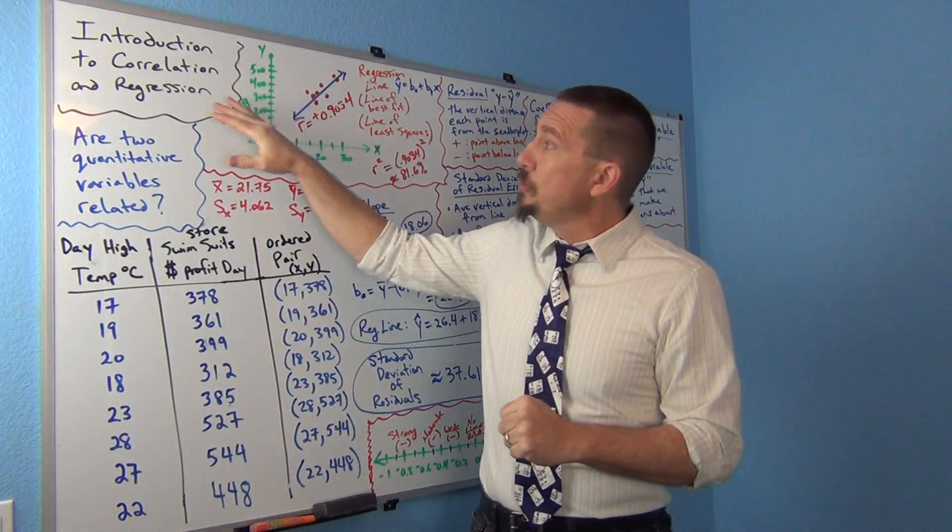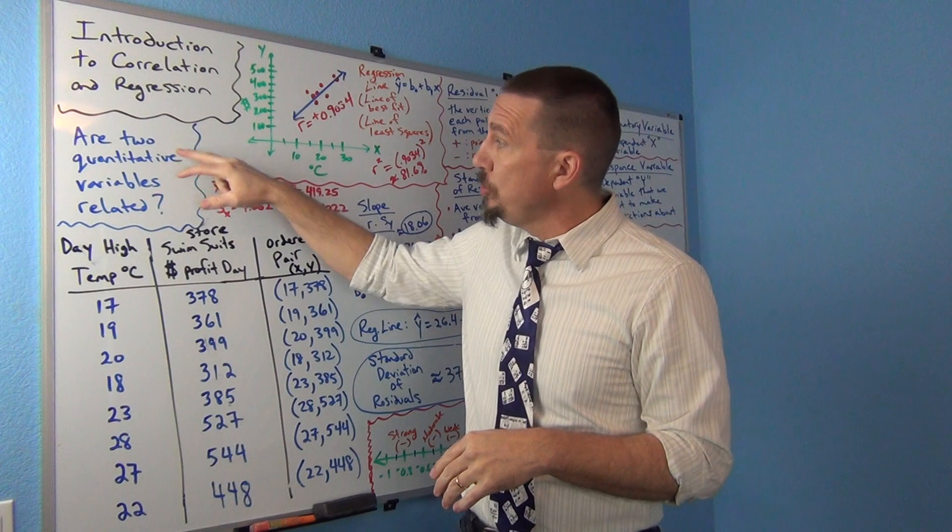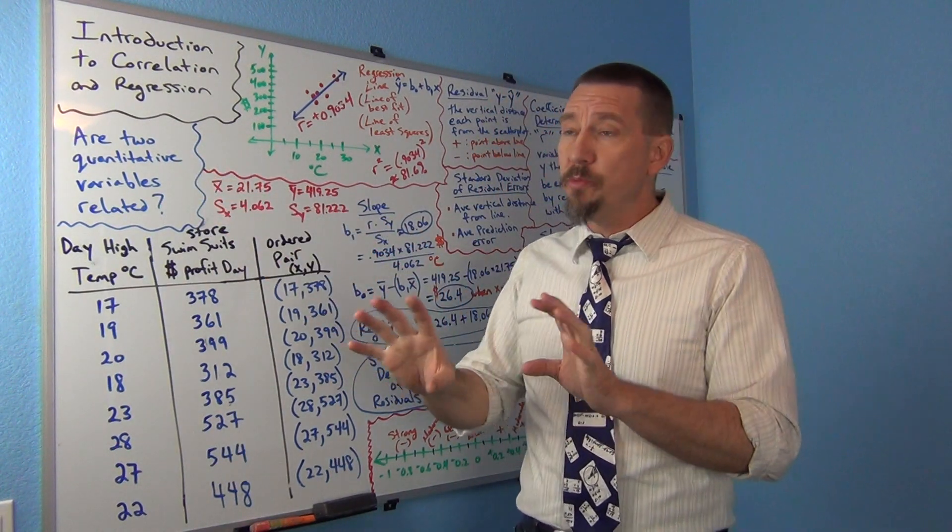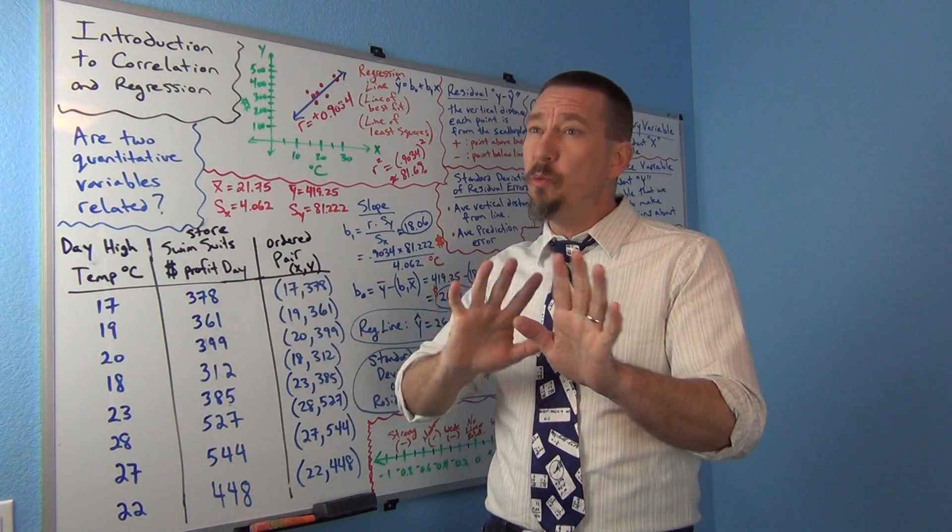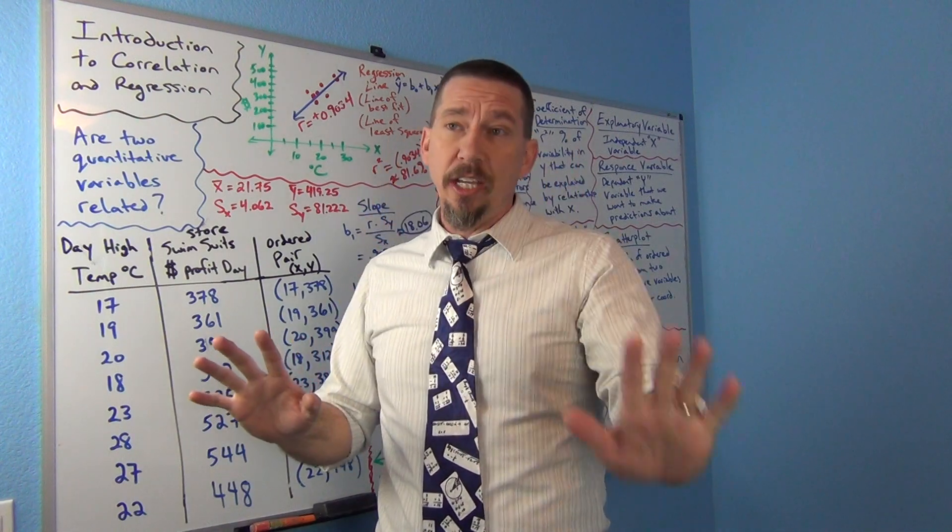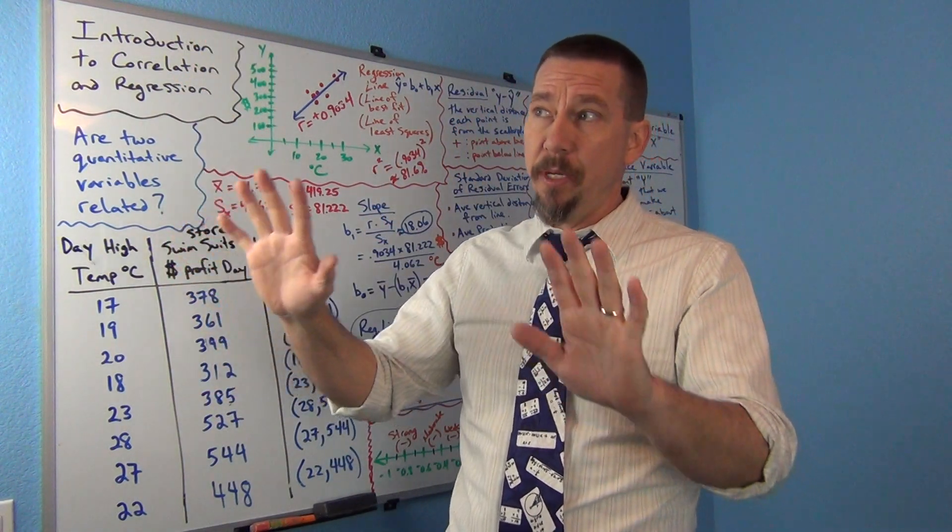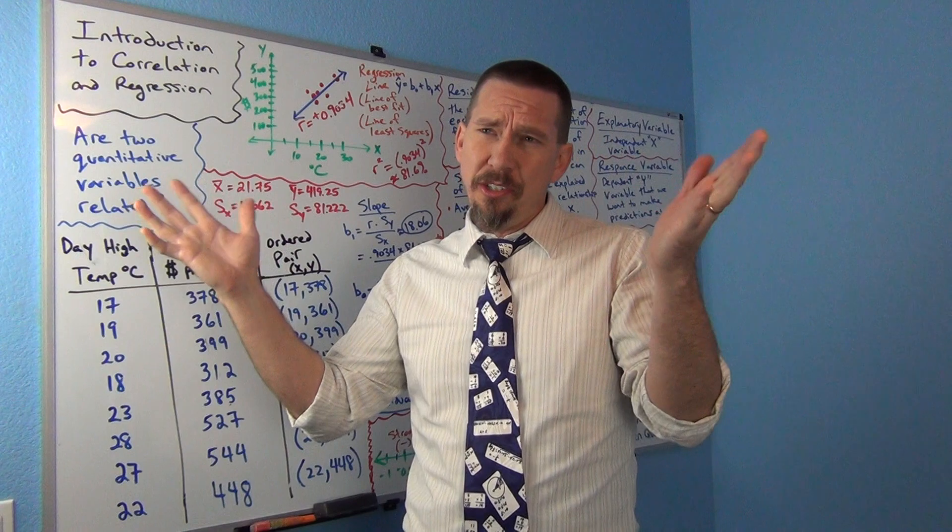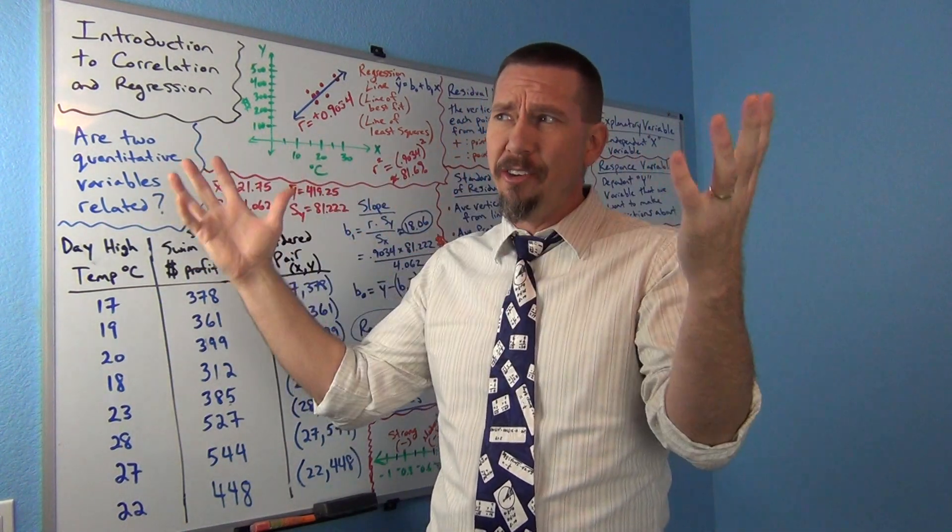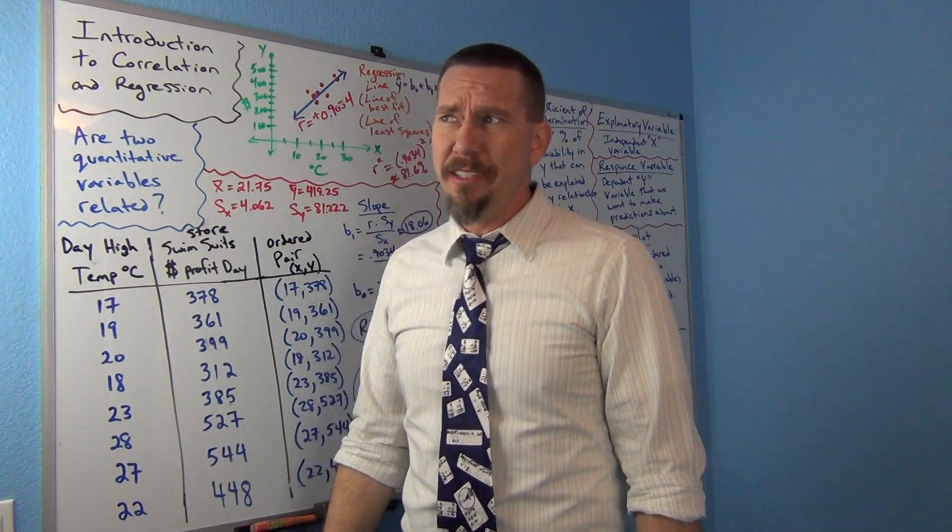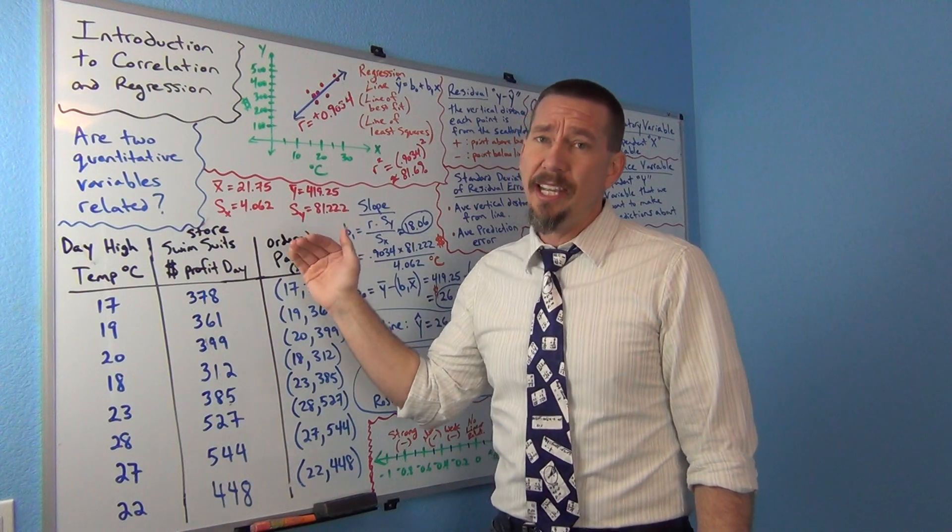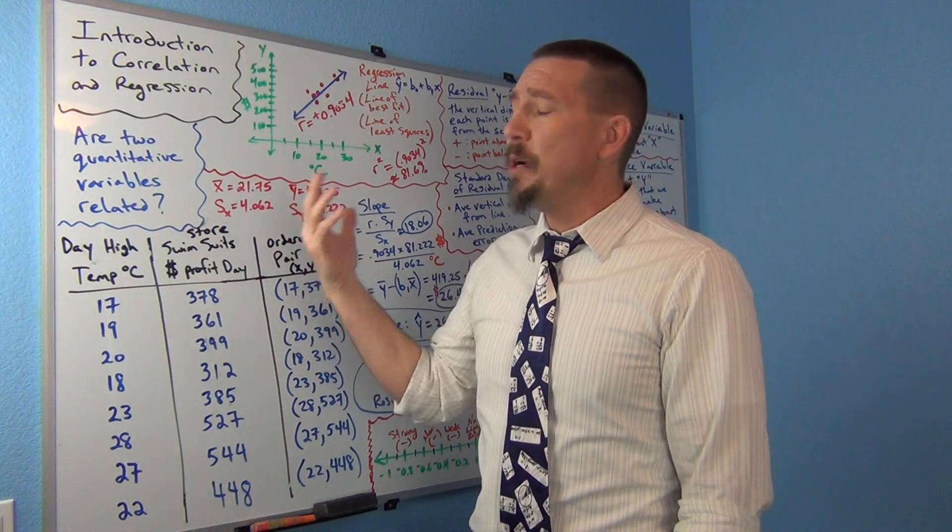The key with correlation and regression is that you're dealing with two different quantitative data sets, usually with different units. And the different units is really what changes the way we analyze. If you're comparing the amount of profits for one company to the profits for another company, you can do that with a two-sample t-test - just compare the profits directly and count how many standard errors apart the sample means are. But when you're dealing with two completely different quantitative variables, it becomes much more complicated.